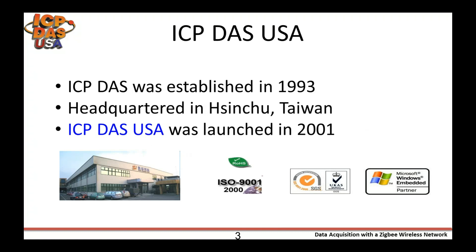To start, just some quick background information. ICP-DAS was established in 1993 and is headquartered in Sinshu, Taiwan. ICP-DAS USA was launched in 2001 to support the North and South American markets. We have over 200 R&D engineers. We work closely with them to add new features to our existing products, develop new products, and to support our customers. Most of our products are ROHS compliant, meaning they are lead-free and ISO 9001 certified.